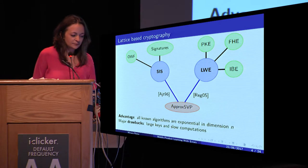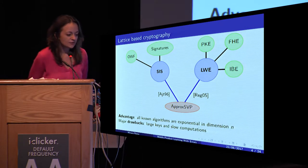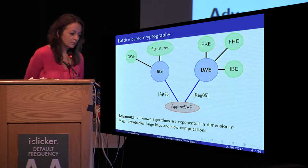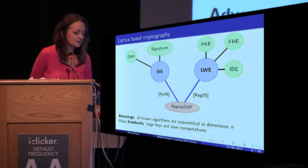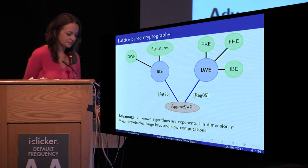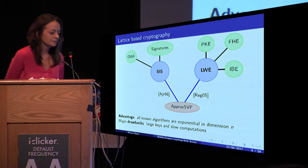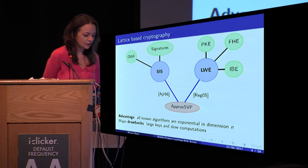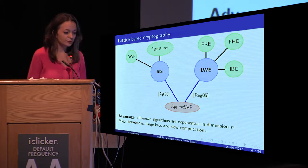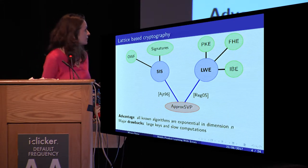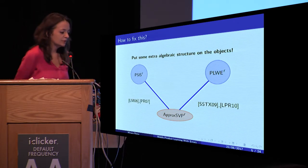However, the efficiency is not so good. All the cryptographic constructions have two major drawbacks: large keys and slow computations. In order to improve the efficiency, two new problems have been introduced: polynomial SIS and polynomial LWE.